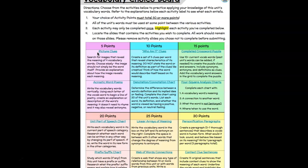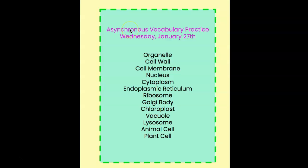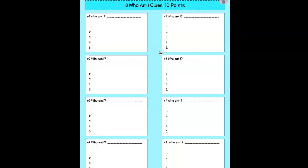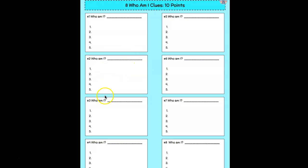At the very end, you're going to delete any of the slides that you chose not to complete. For example, say that I'm looking at the words organelle, cell wall, cell membrane, and nucleus. I'm going to click on the 'Who Am I' activity and write the word nucleus, then give five clues without using the term. The same thing applies for organelle, and so on and so forth.